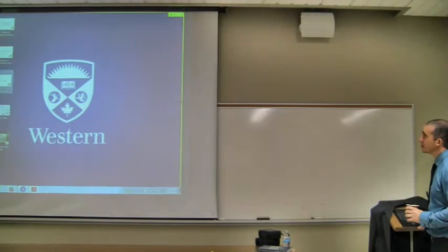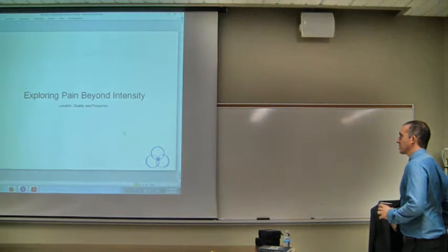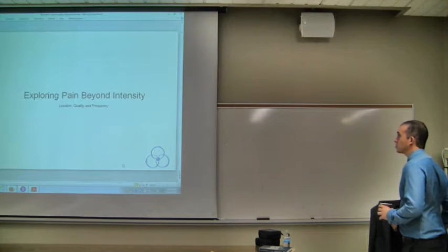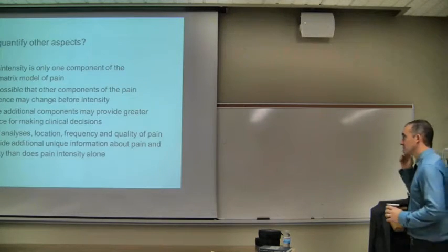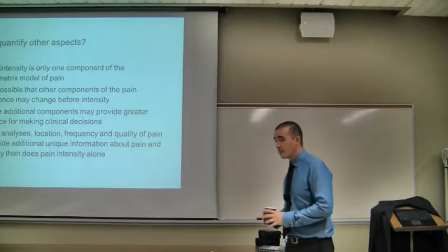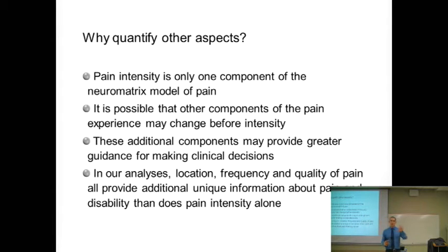We talked about looking at intensity, but of course there's more than that. I'm going to start looking at some of the tools in the package. We found a ton of slides in this one. Let's look at location, quality, and frequency. We looked at that neural matrix model — the sensory discriminative aspect includes things like intensity, location, quality, frequency, that sort of thing. So if we're just asking about intensity, we're really only getting one aspect of that sensory discriminative domain.